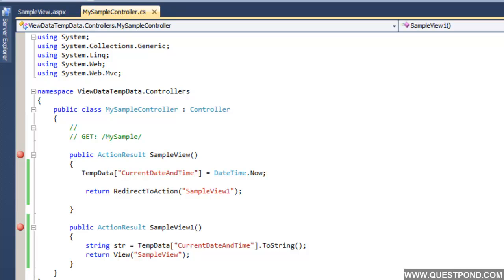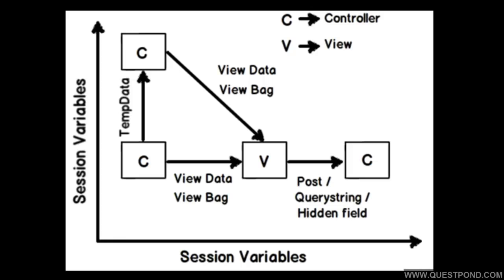Let us put a big summary picture of where ViewData, TempData, and ViewBag fit in. If we are moving from controller to view, use ViewData or ViewBag. ViewBag is a collection of ViewData. If we are moving from controller to controller, use TempData. If we want to persist information from view to controller, we can use hidden fields, text boxes, query strings, httpPost and httpGet — which we have already discussed in previous videos.